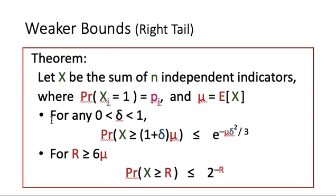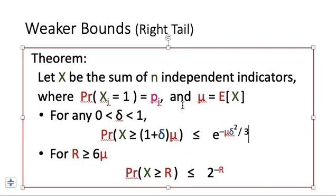The first bound for the right tail: suppose delta is a small value between 0 and 1. Then the probability of X greater than or equal to (1 + delta) times mu will be less than or equal to e to the power minus mu delta squared over 3. Note that for the original bound there is no limitation on delta, but here we restrict delta to be between 0 and 1.